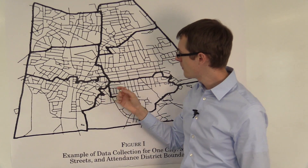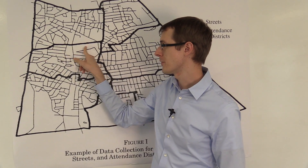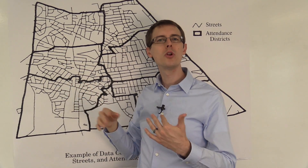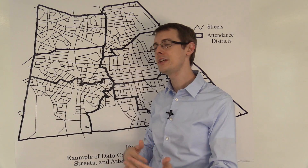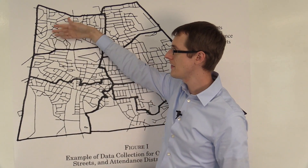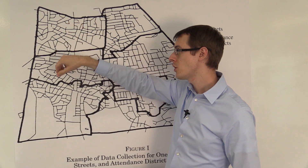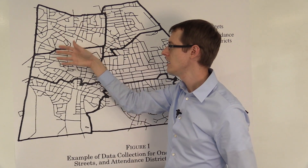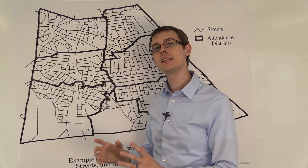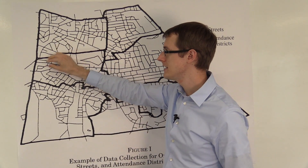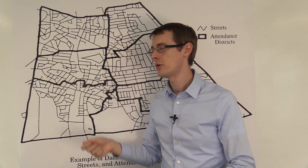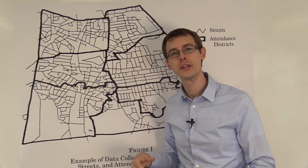The basic idea is that if we look at houses close to this border, they're going to be pretty similar — probably in the same neighborhood, with similar local amenities. But the houses on one side of the border are zoned for one school, whereas the houses on the other side are zoned for a different school. So our running variable is distance to the border, and the cutoff is exactly the border. If you're on this side, you get treated with the high-quality school; if you're on the other side, you get the lower-quality school.